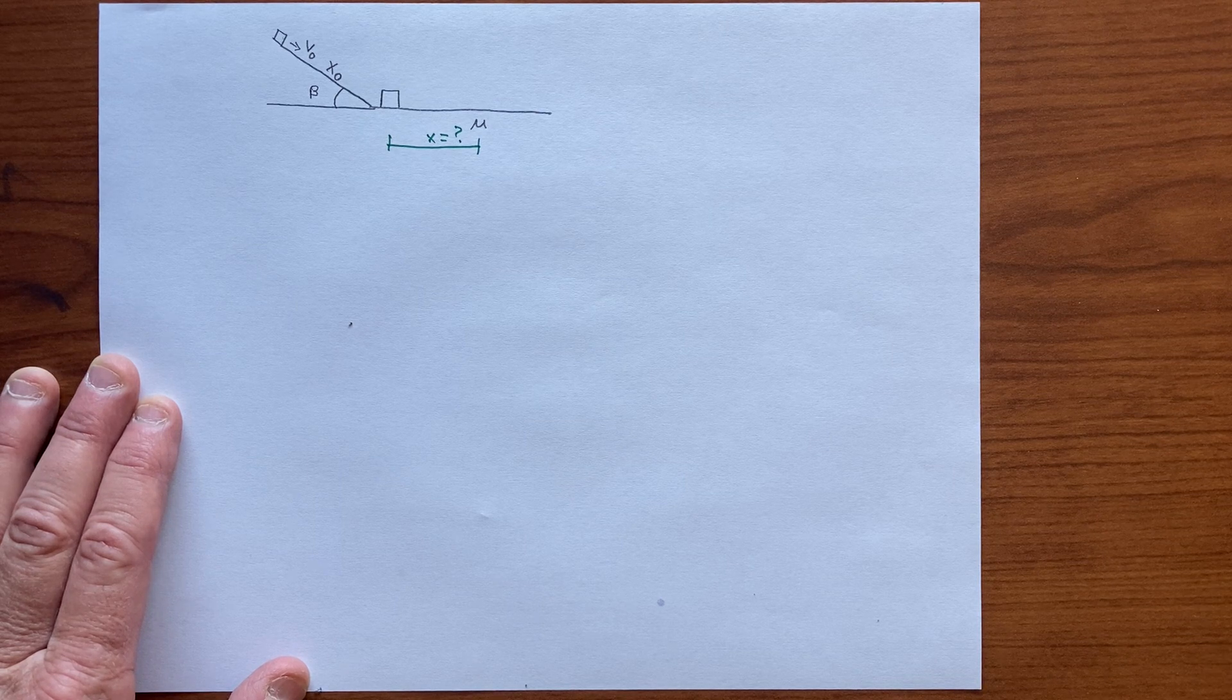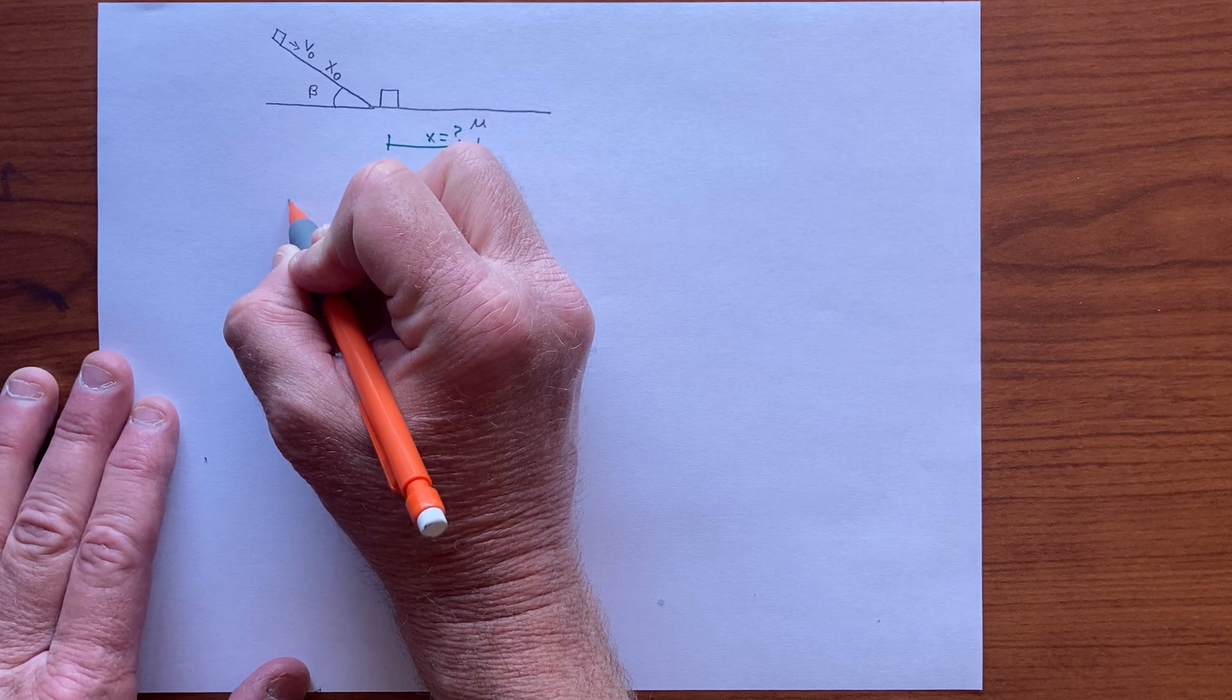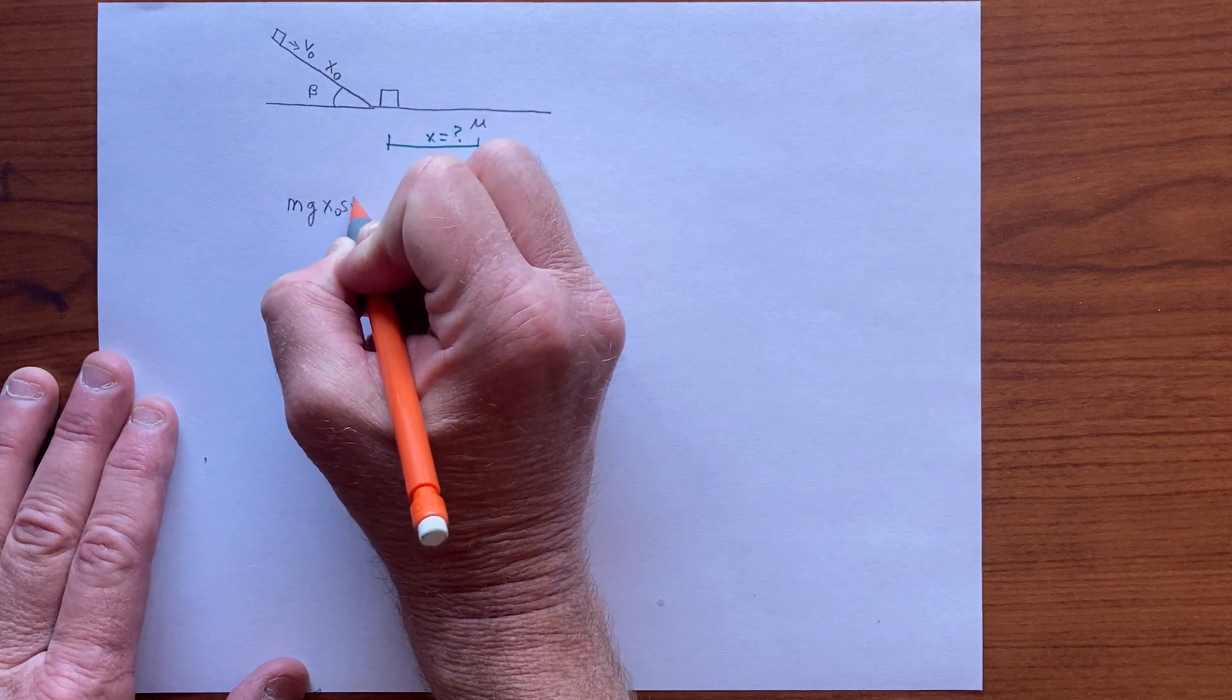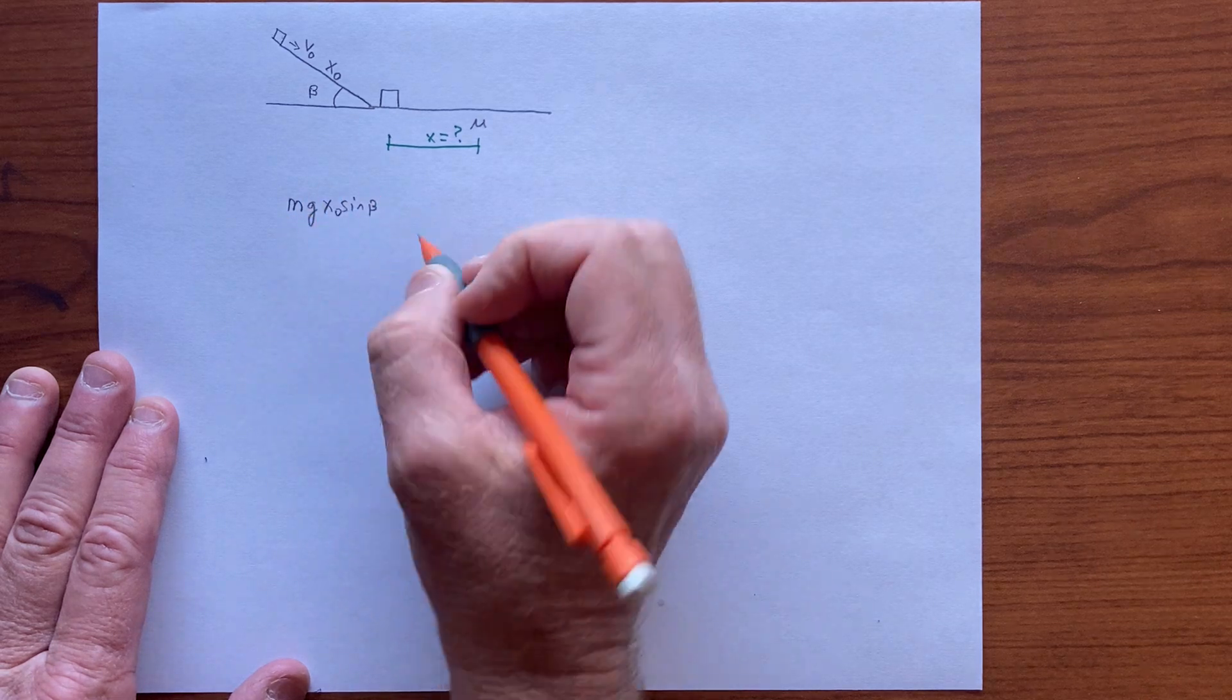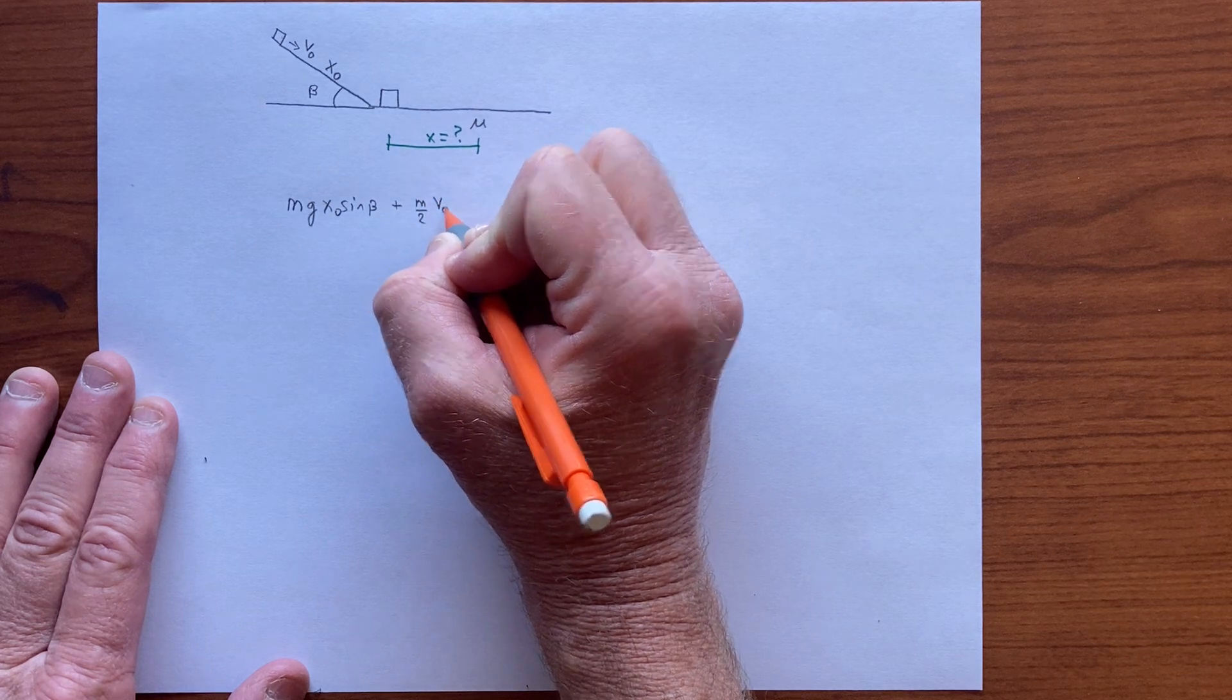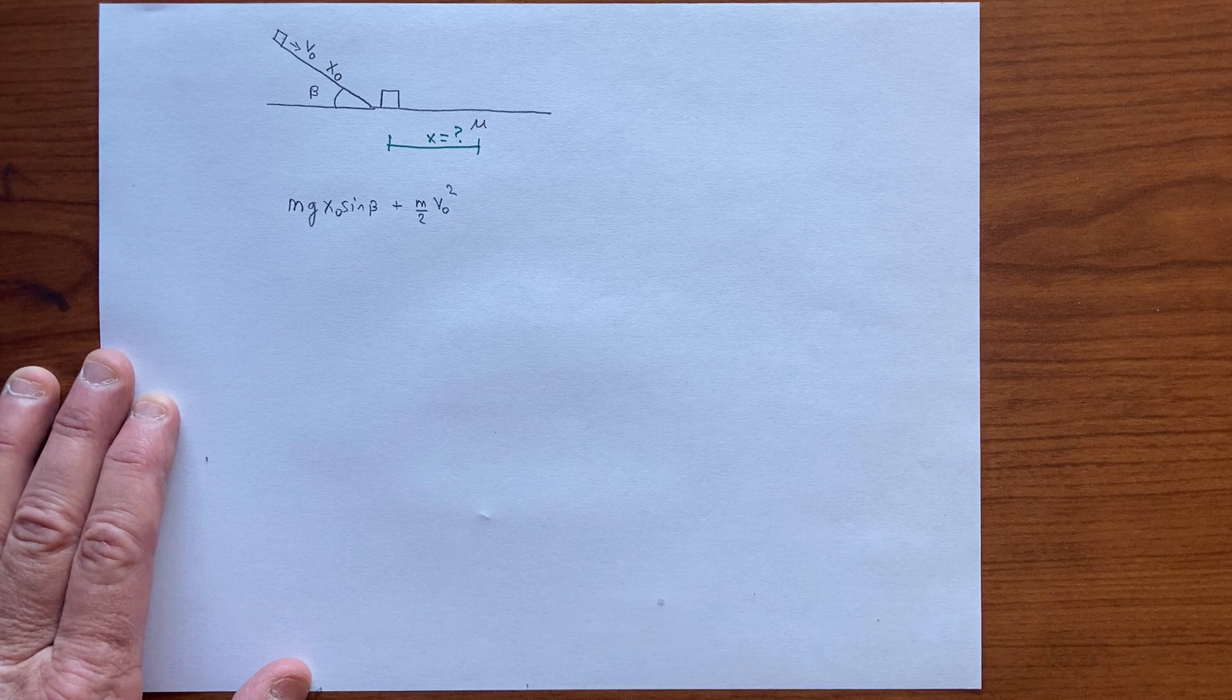And so we have the total energy here, which is the unknown mass times g times the height, which is x-naught sine of beta, so that's the gravitational potential energy, plus we also have a kinetic energy, unknown mass divided by 2 times v-naught squared. That's the total energy of the system.